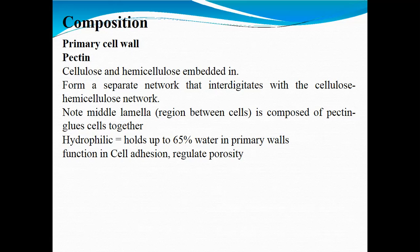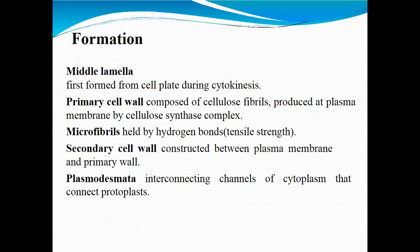The middle lamella is composed of pectin, which holds cells together. These are hydrophilic — water-loving molecules — and hold up to 65% of water in the primary cell wall, regulating ion function and the porosity of the cell wall. The middle lamella is first formed from the cell plate during cytokinesis. During cytokinesis, when one cell divides into two, a new cell wall or cell membrane is generated. The primary cell wall is composed of cellulose fibrils produced at the plasma membrane by the cellulose synthesis complex. Microfibrils held by hydrogen bonds give specific strength to the cell wall. Plasmodesmata are interconnecting channels of cytoplasm that connect protoplasts with each other.